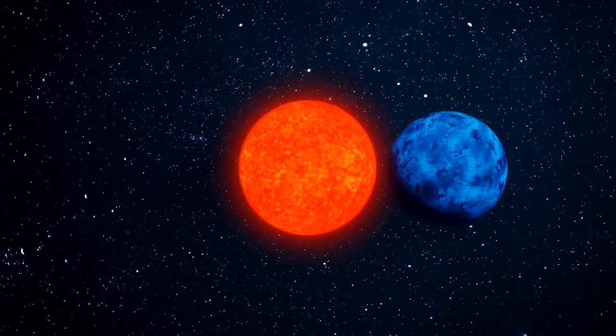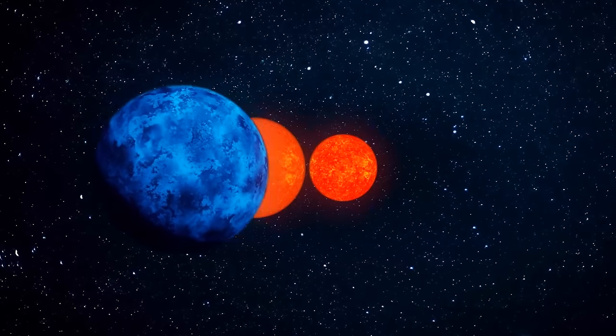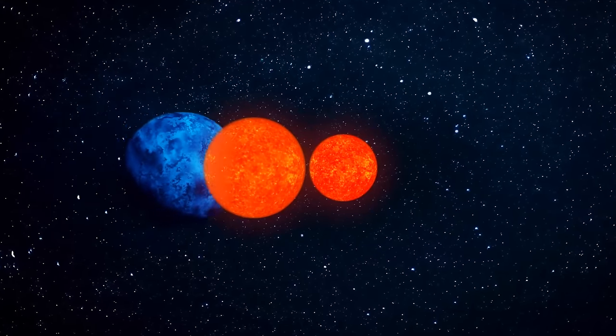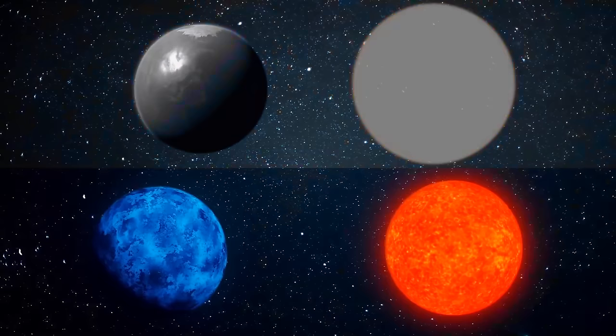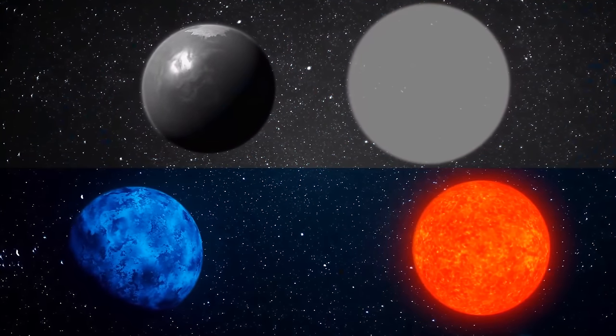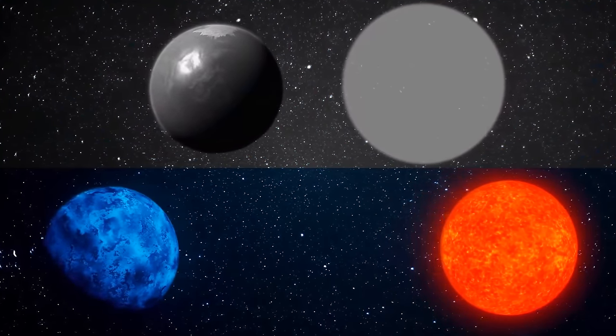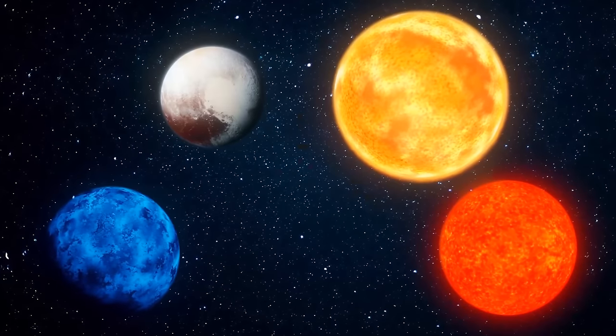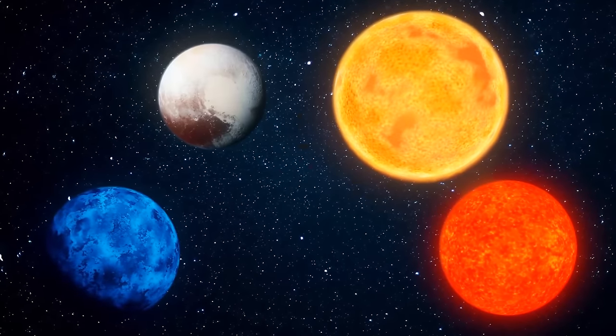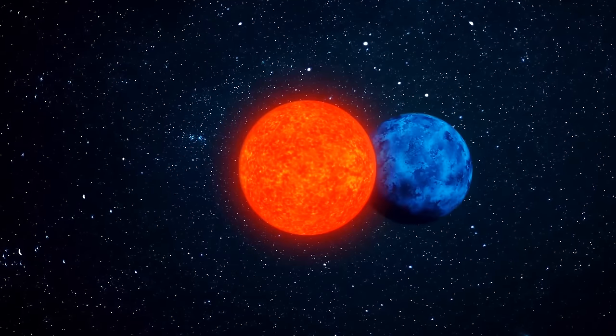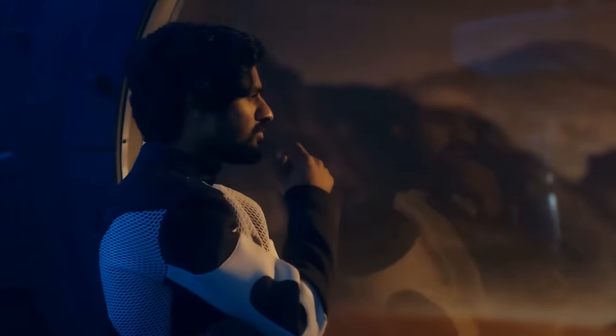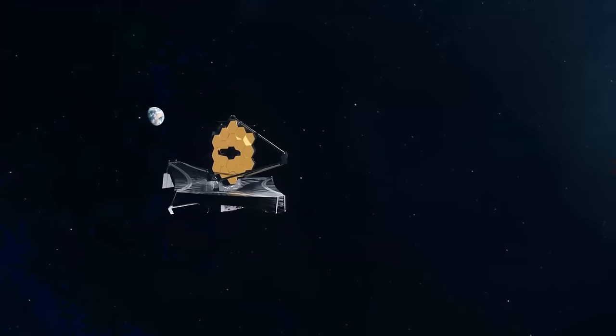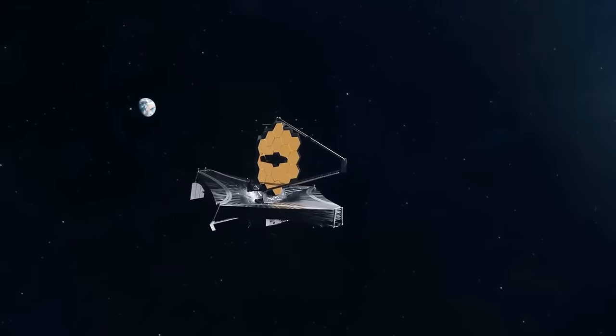TOI 1452b also orbits a small red dwarf. And not even one, but two at once. At the same time, if the previous planet was close to its sun, then this one, on the contrary, is very far away. It's two and a half times farther from its stars than Pluto is from the sun. And it moves at great speed. A year there lasts only 11 days. But we still don't know many things about this planet. We'll probably get some new information when scientists observe it from the James Webb Telescope.